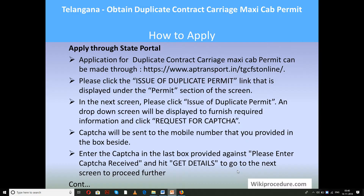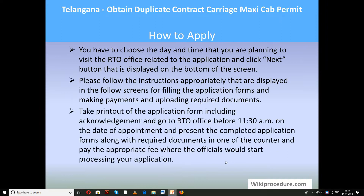You will be given an OTP — please enter the OTP and click 'Get Details'. You will be taken to the next window where you have to fill in the required details and upload all the required documents as prompted. After successful completion of applying, you will get an acknowledgement along with the date and time when you have to visit the RTO officials. Please go to the RTO office before 11:30 AM on the appointed date. Submit your documents, printout of the online application, and the acknowledgement to the officer, who will direct you to the right payment counter.